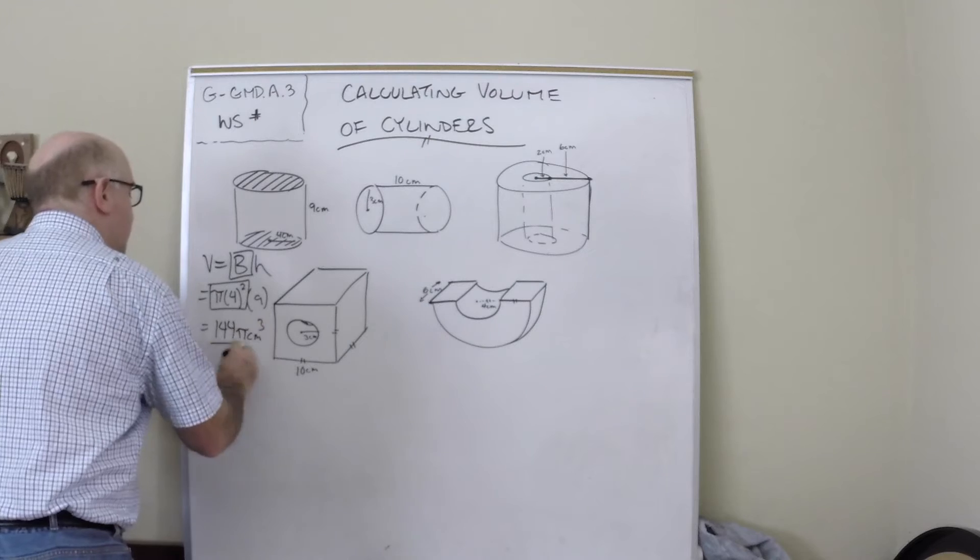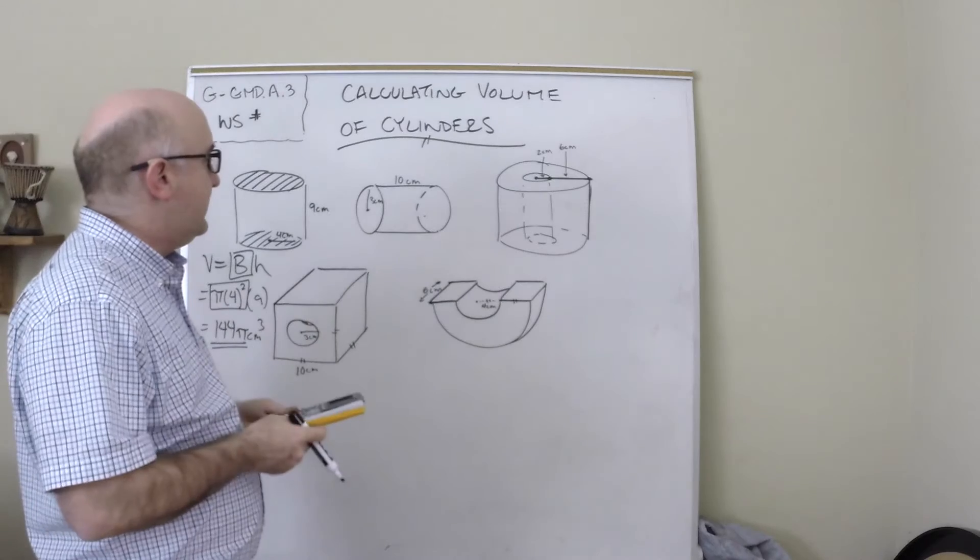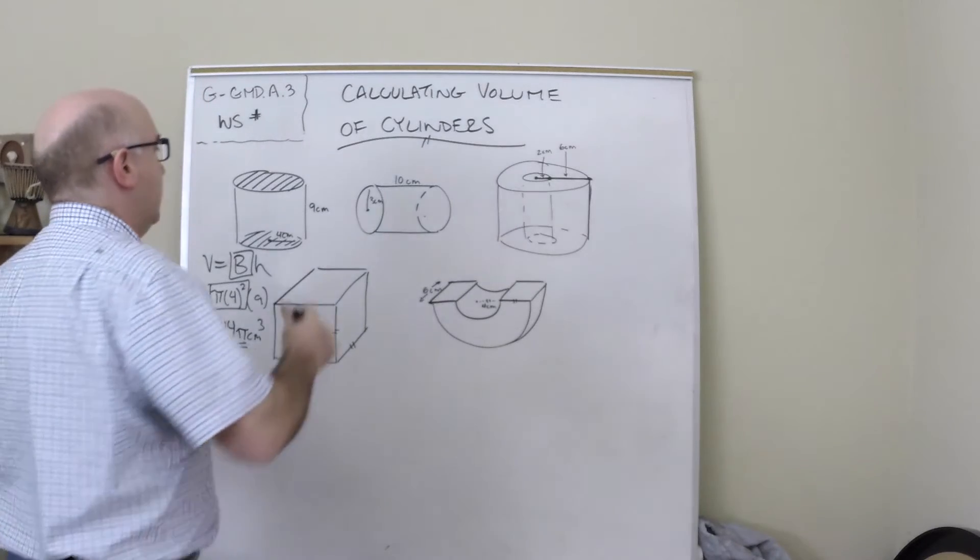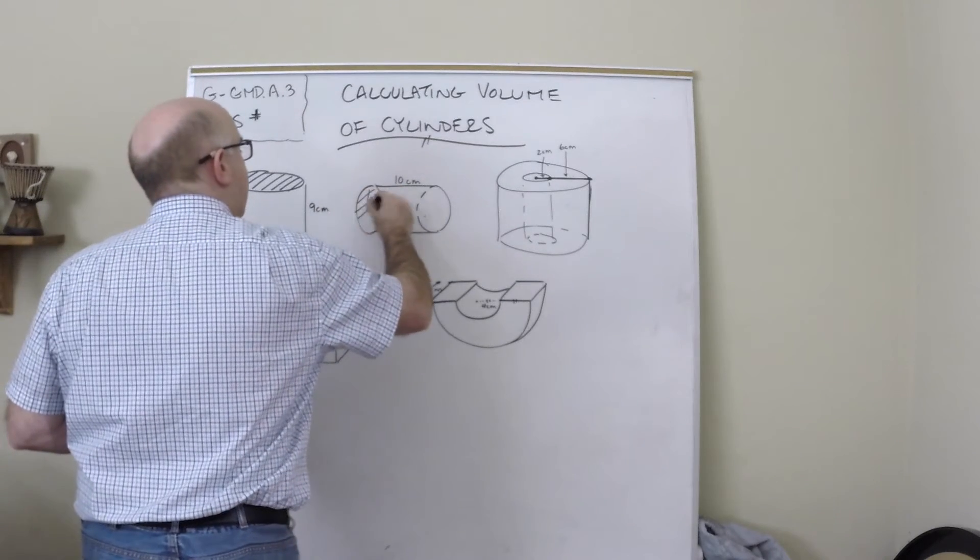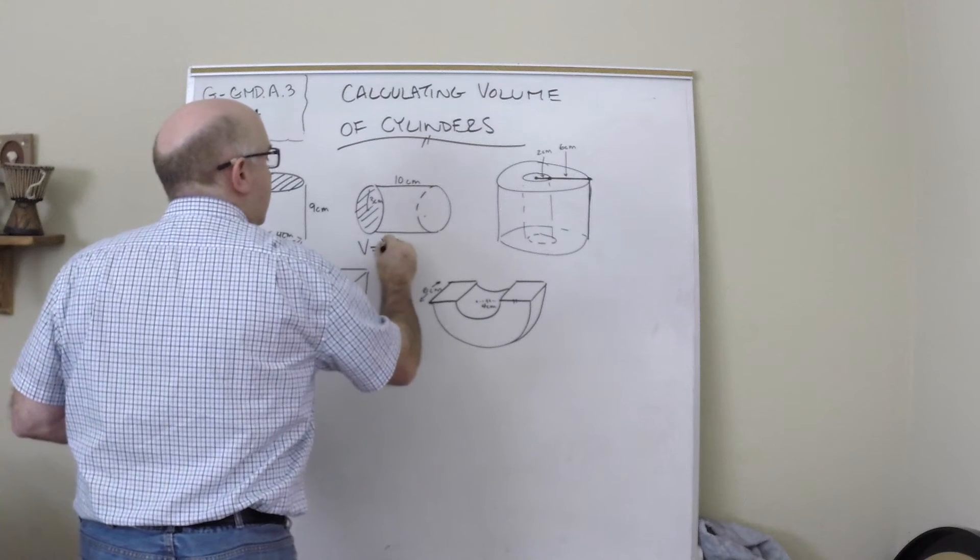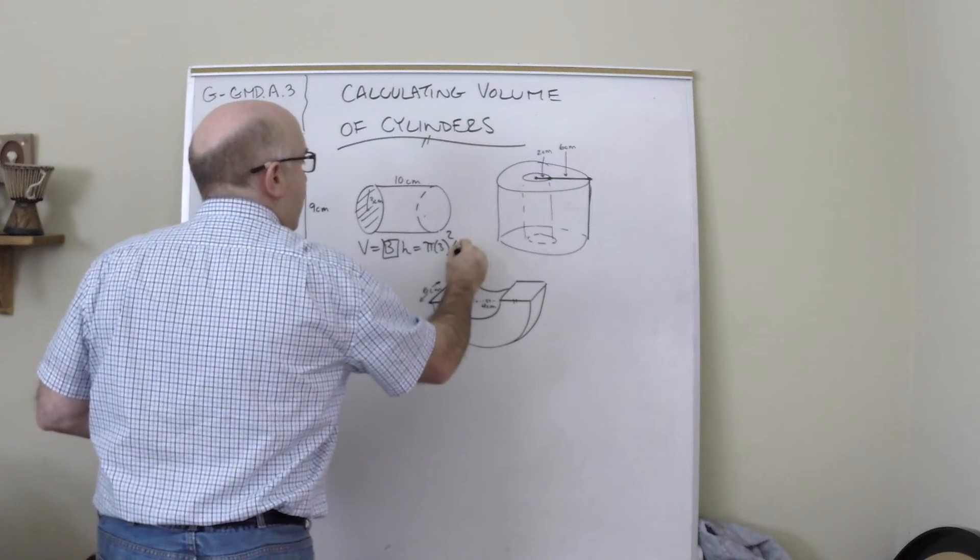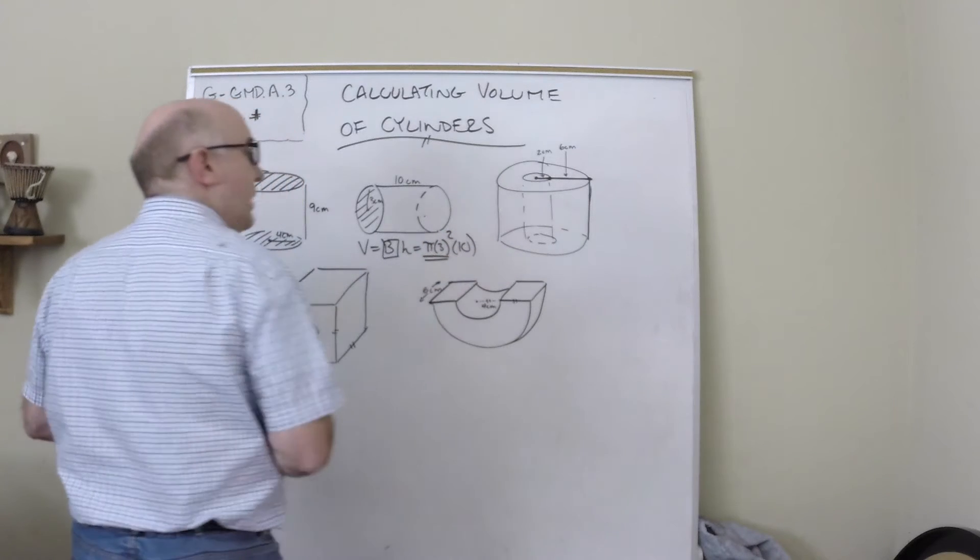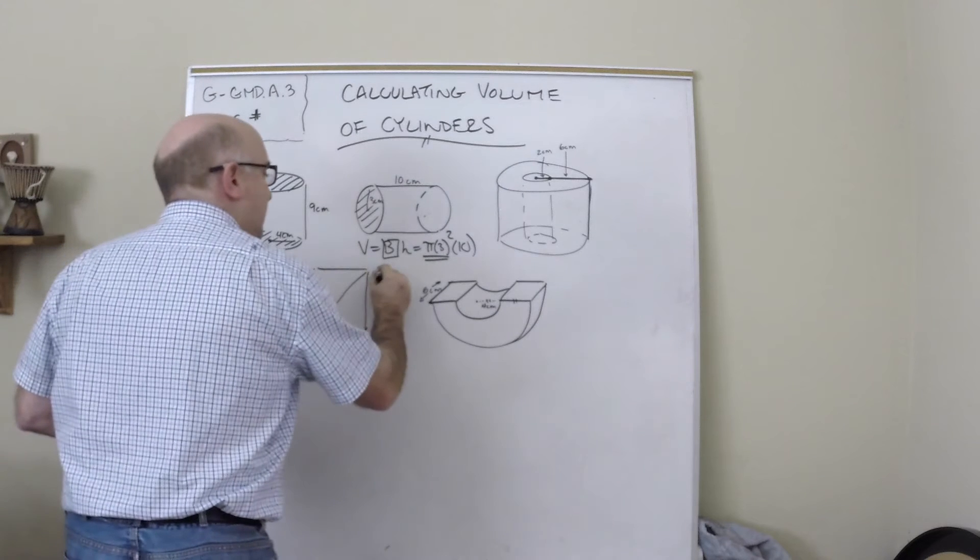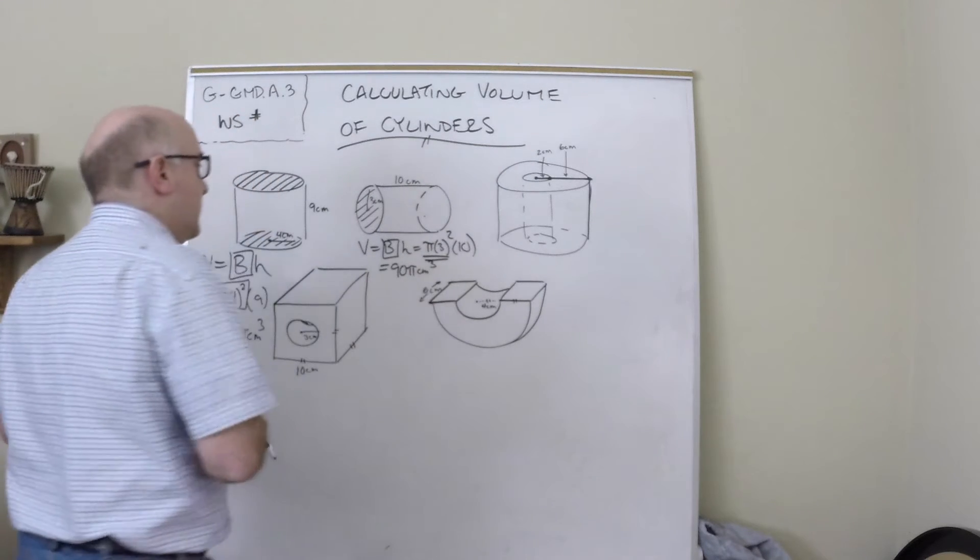And again I like to just leave them in their exact form. Here again, same thing, we have a cylinder, so we will go one base area times the height, πr²h. This part is the base, so we get 90π as our answer, centimeters cubed because we're doing volume.